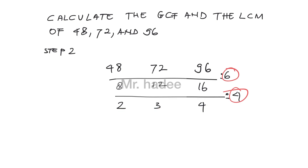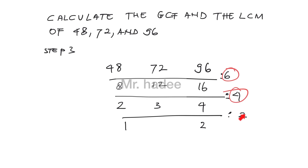Now we have 2, 3, and 4. No single number can divide all of 2, 3, and 4. Continue to Step 3. If there are several numbers that can be divided by the same number, divide them. 2 and 4 can be divided by 2. 2 divided by 2 equals 1. 4 divided by 2 equals 2. But don't circle this number, because it is not included in the GCF.